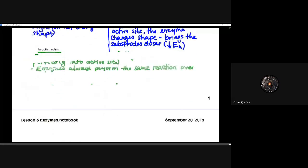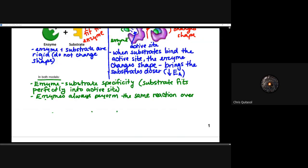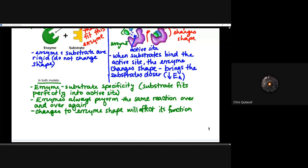In both models, the enzyme and substrate have specificity — substrates fit perfectly into an active site, whether it's a rigid one-to-one fit or the induced fit model where the enzyme changes shape slightly. An enzyme-substrate complex is formed. Enzymes always perform the same reaction over and over again; they only ever break down that one specific thing. Changes to enzyme shape — such as denaturing — will impact its function.